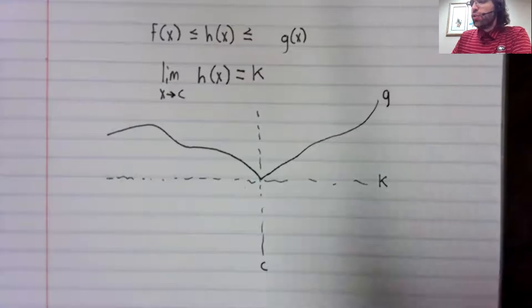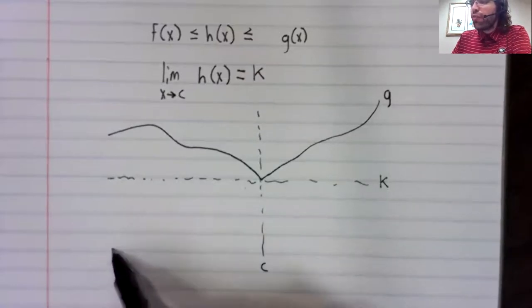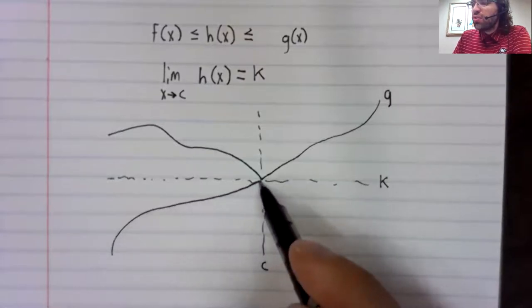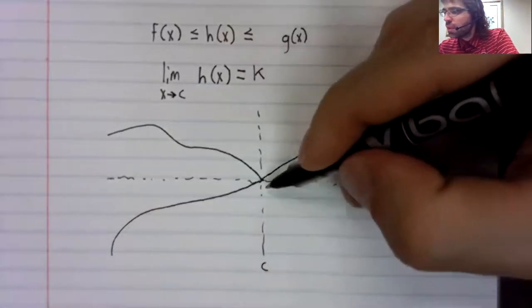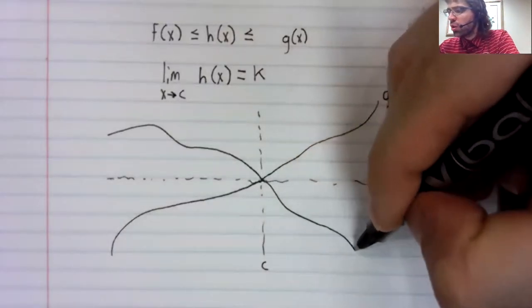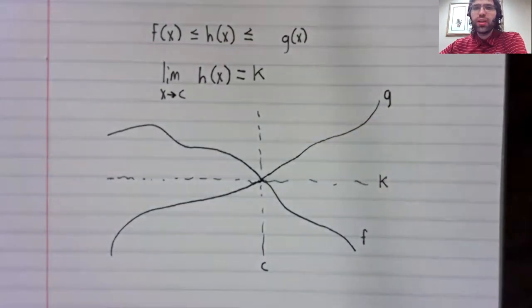And you have a smaller function F. And as X approaches C, F also approaches K.